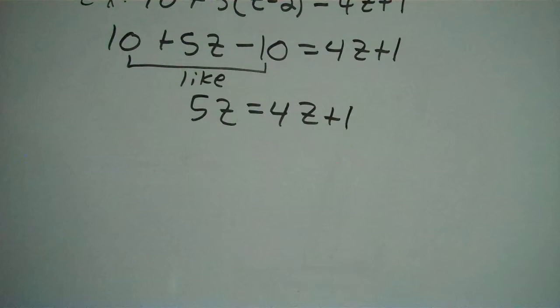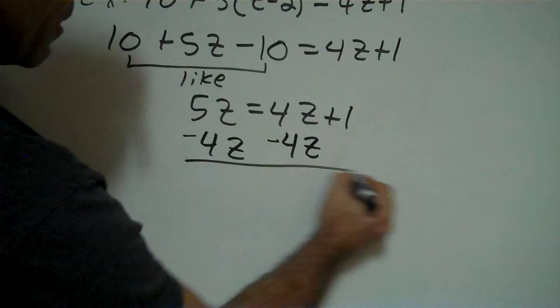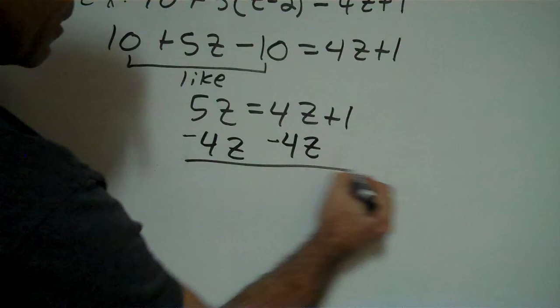So all that's left is a 5z equal to 4z plus 1. Now I've got a z over here and a z and a number on that side. So naturally we want to add a negative 4z to both sides and look what happens. 5z minus 4z gives me 1z like I want it. That zeros out, so all that's left is my 1z. Alright, so that is the end of that video. See you next time. Bye.